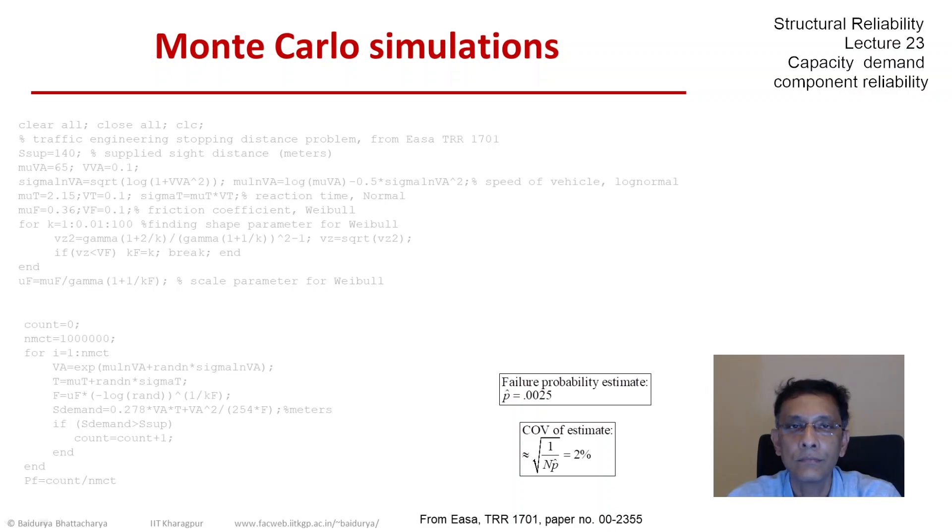And the COV of the estimate, we can estimate that as the square root of 1 over NP. And that turns out to be a very small number, 2%. So we should be able to accept this answer.